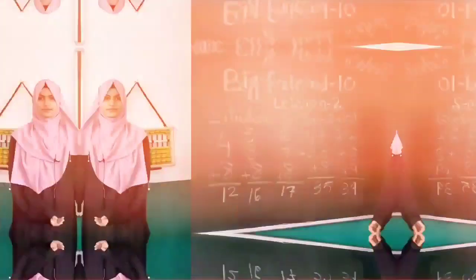So plus 8 karne ke liye hum kya karenge? Plus 8 is equal to minus 2 plus 10. 8 ke best friend 2 se break up karenge. As we learned from plus 9 and plus 8, now we are going to start plus 7.